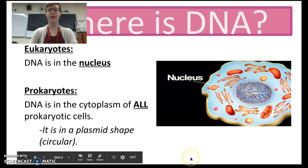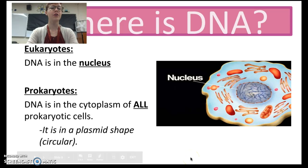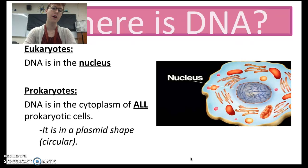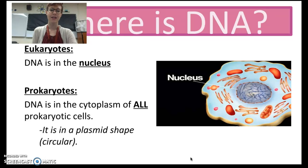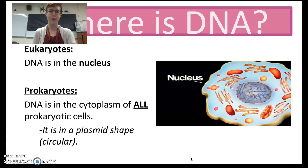So where is DNA? In eukaryotes, DNA is found in the nucleus, but in prokaryotes, because they don't have a nucleus, DNA is in the cytoplasm. As a reminder, it's in this shape called a plasmid, which is just a circle.